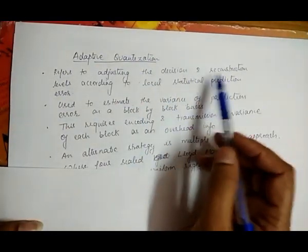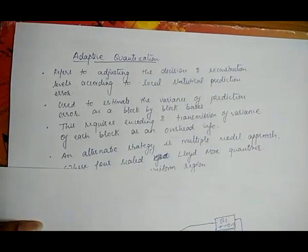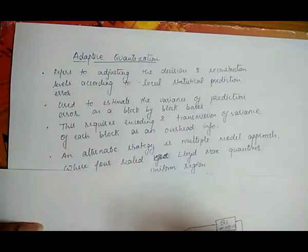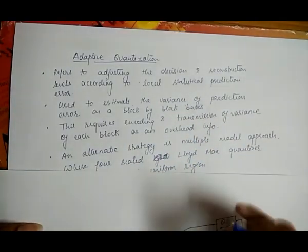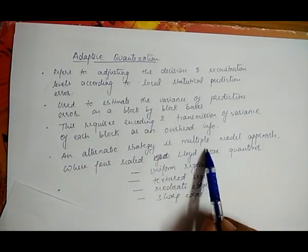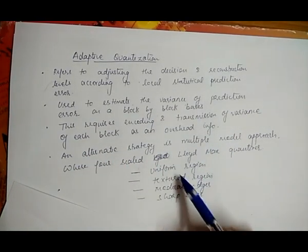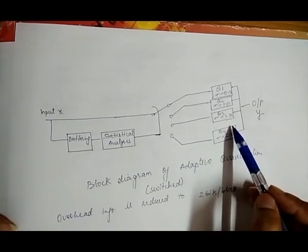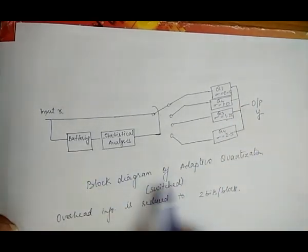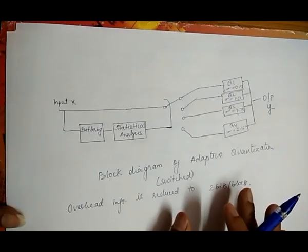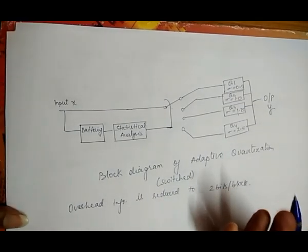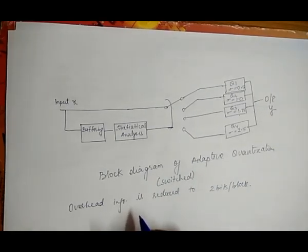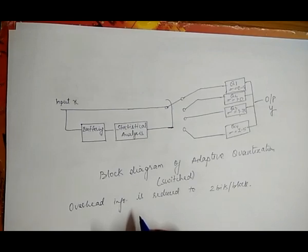To summarize, adaptive quantization refers to adjusting the decision boundary and reconstruction level according to the local statistical prediction error. The variance of the prediction error is used on a block-by-block basis. The alternative strategy — the multiple model approach — uses four scaled Lloyd Max quantizers, and one is selected at each block based on the block's variance.